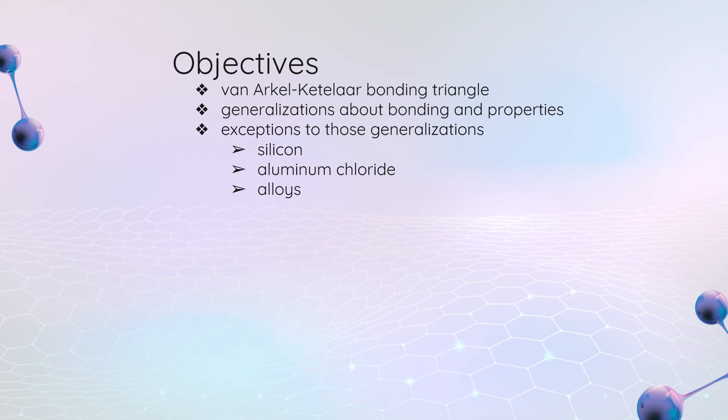And our objectives for today: we are going to take a look at the Van Arkel-Ketelar bonding triangle that helps us to classify bonds as being ionic, covalent, metallic, or something in the middle. We're going to look at some generalizations about bonding and properties, then we're going to look at some super interesting examples of exceptions to those generalizations: silicon, aluminum chloride, and then some alloys.